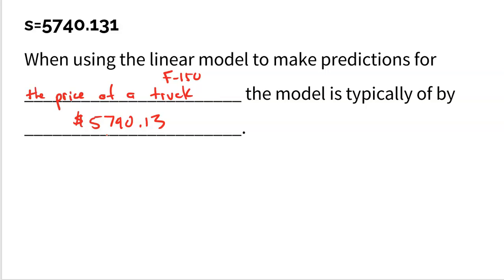So is this line very reliable? I'd say it's kind of mediocre. The R squared is 66%, so the two variables are kind of related but not extremely so. And the S value is kind of on the higher side. If I was predicting the price of a house, being off by $5,700 would actually be pretty good — that would be a low number. But for predicting the price of a truck, this is a higher value; I'd like to be a little more accurate. So these are the two numbers you'd want to report when asked about reliability.